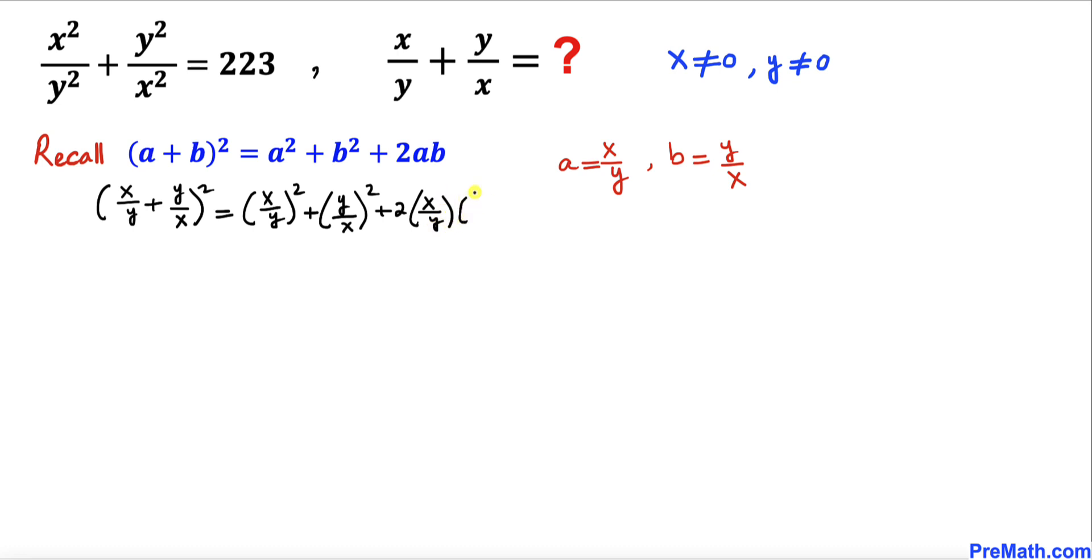Now let's go ahead and simplify the right hand side of this equation. So (x/y)² could be written as x²/y² plus likewise this could be written as y²/x². And here x and x cross each other out, y and y is gone, so we ended up with just 2.